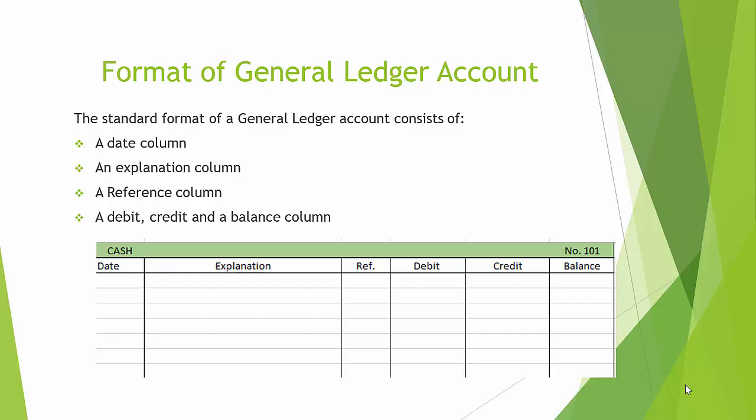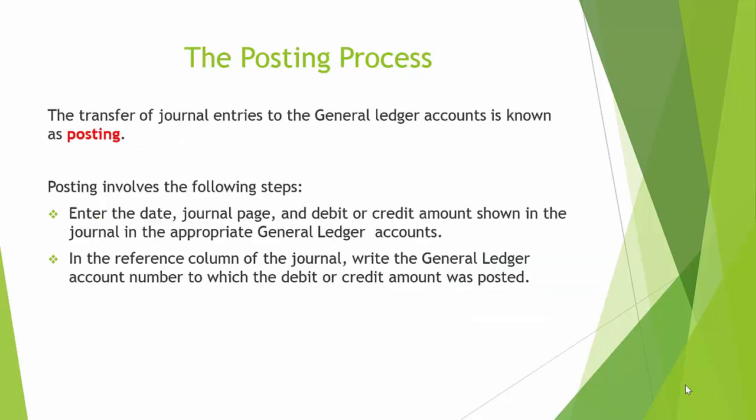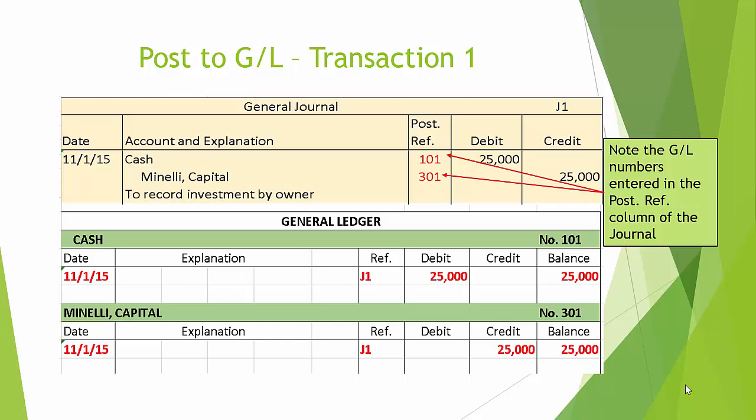The standard format of a general ledger account consists of a date column, an explanation column, a reference column, a debit/credit column, and a balance column. The transfer of journal entries to the general ledger accounts is known as posting. Posting involves the following steps: enter the date, journal page, and debit or credit amount shown in the journal in the appropriate general ledger accounts. In the reference column of the journal, write the general ledger account numbers to which the debit or credit amount was posted.